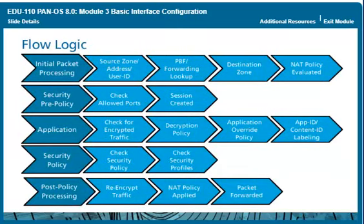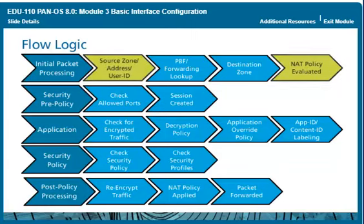This diagram is a simplified version of the flow logic of a packet traveling through a Palo Alto Networks firewall. The course will reference this diagram to address where specific concepts fit into the packet processing sequence. For more information about the packet handling sequence inside of a PAN-OS device, see the Packet Flow Sequence in PAN-OS document available on the Palo Alto Networks support website at https://live.paloaltonetworks.com/docs/doc-1628.